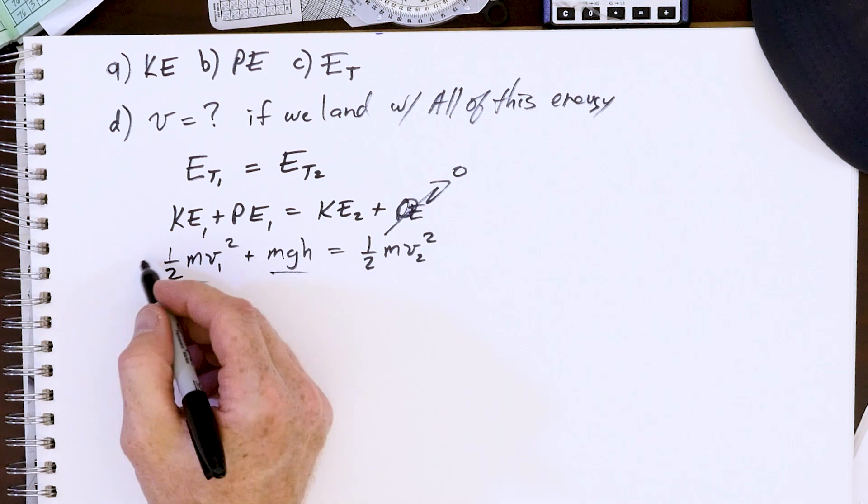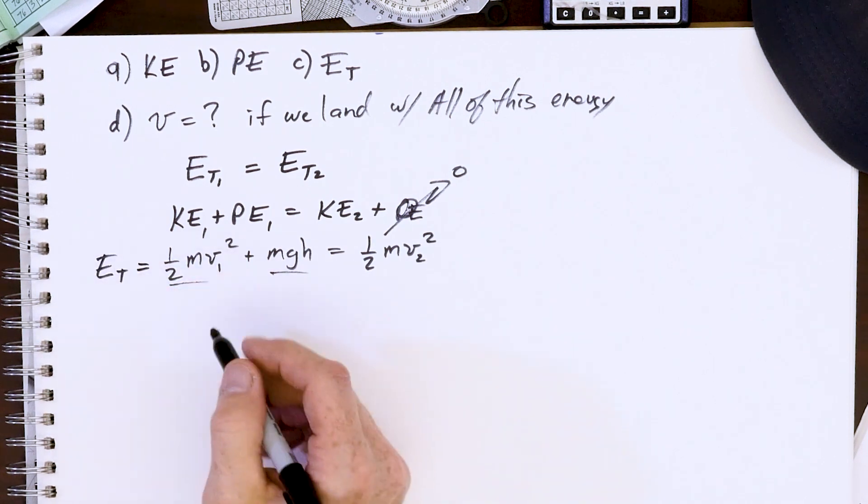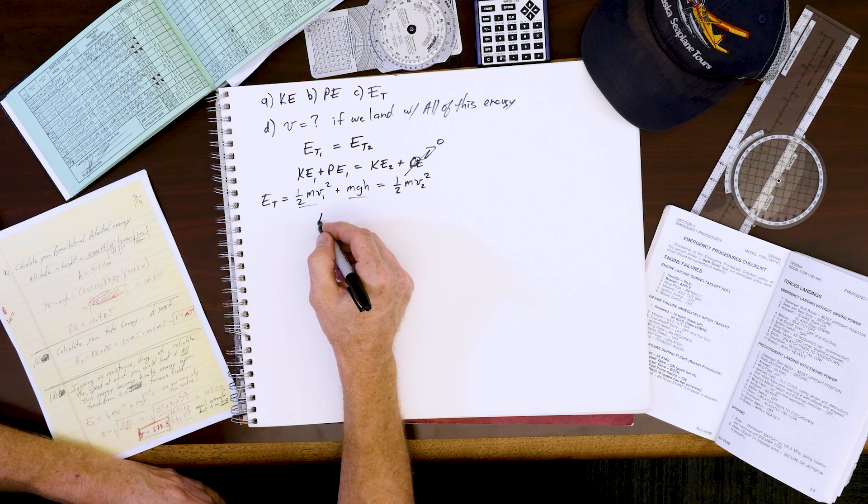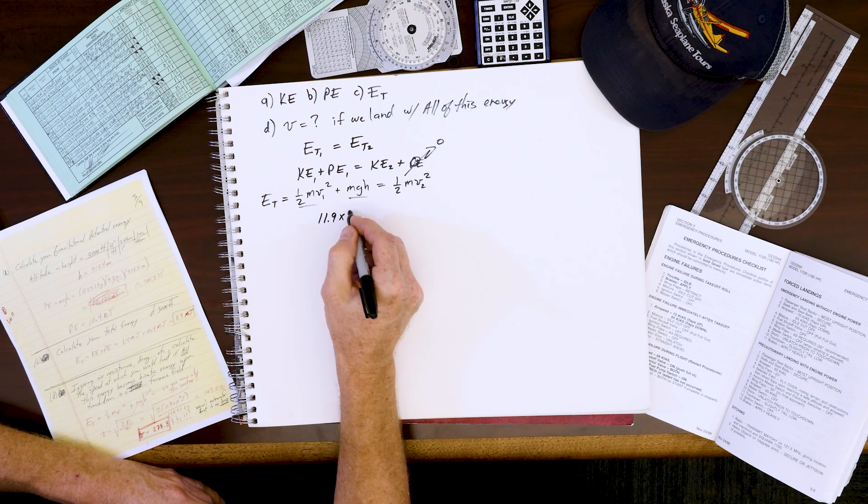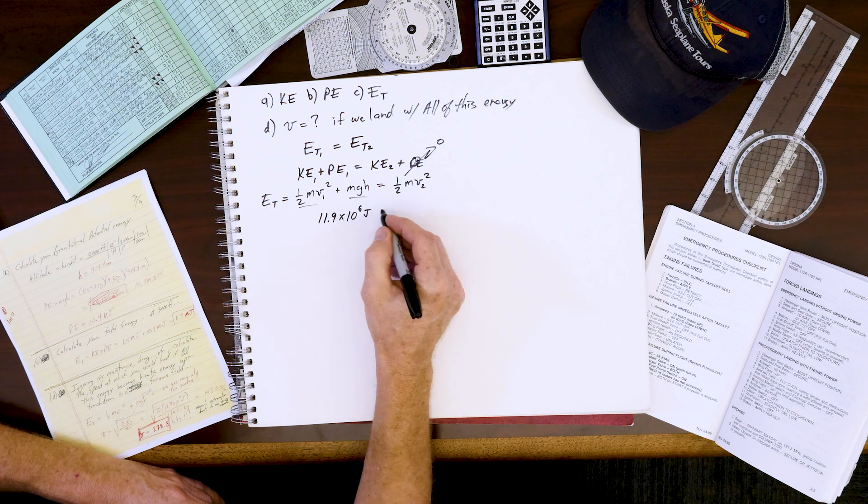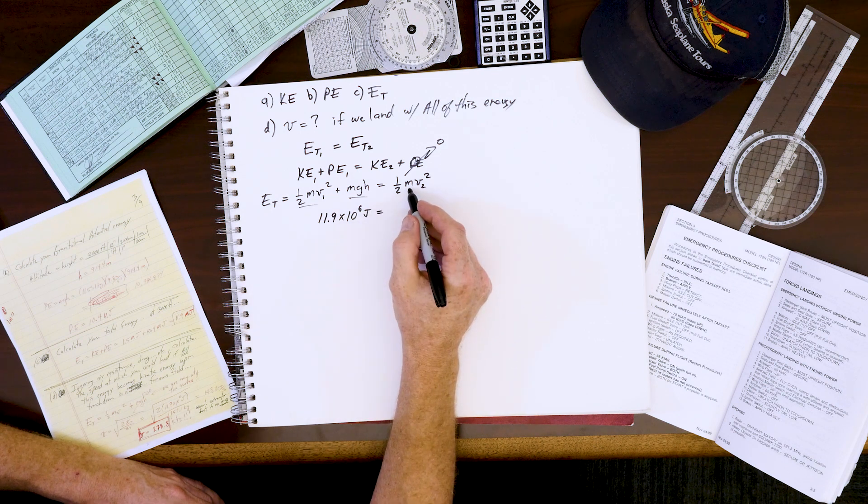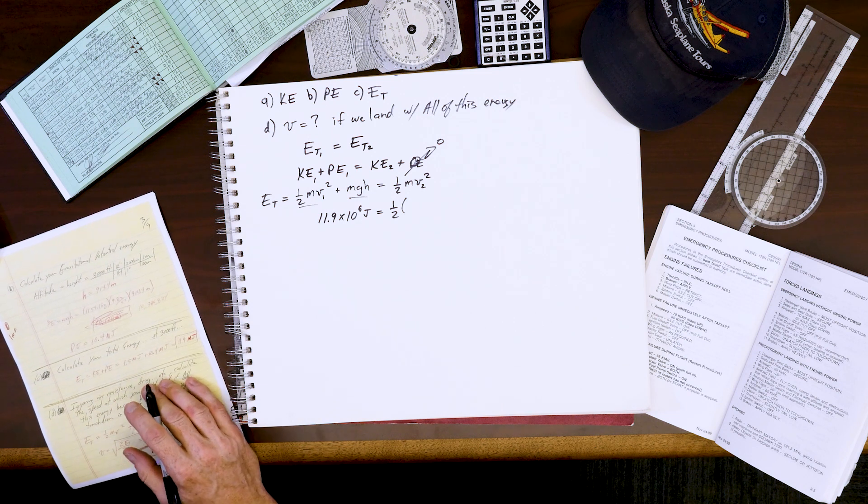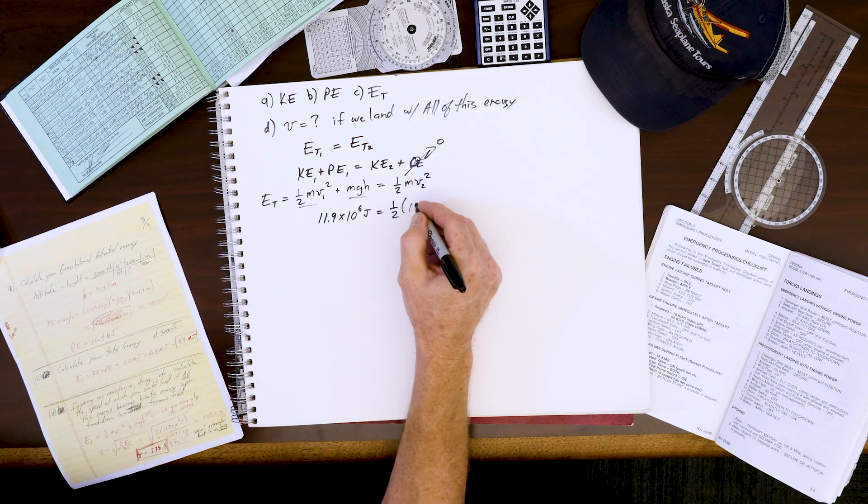We already have from our answer for part C that this is the total energy, which we had as 11.9 megajoules, 11.9 × 10⁶ joules. The mass of the airplane is still the same: ½ times 2550 pounds, which we said was 1159.1 kilograms.